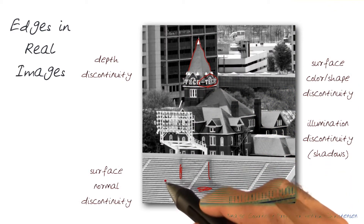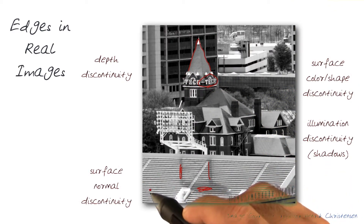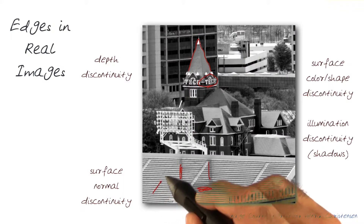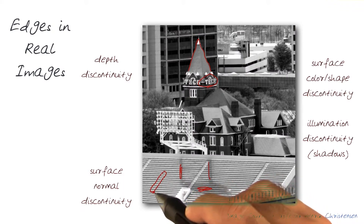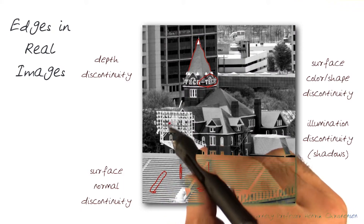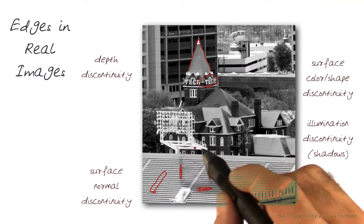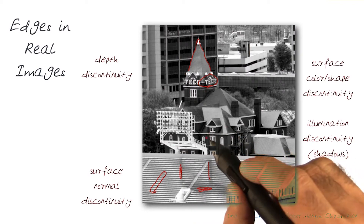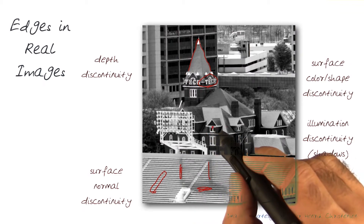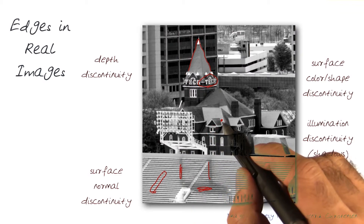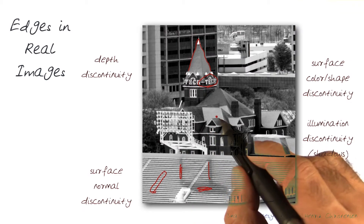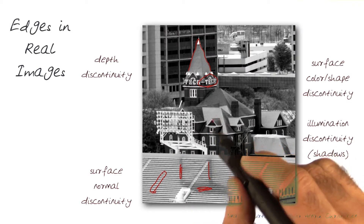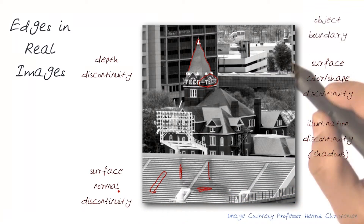Surface normals — if you look at the steps here, you can see a lot of discontinuities because the surface normals at these steps are changing around. You can see those kinds of things across the shape here. Each part of the shape basically has a different surface normal, and it helps us distinguish that.